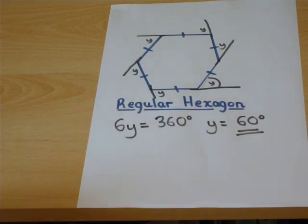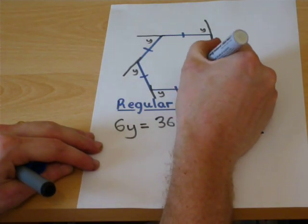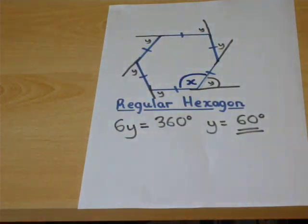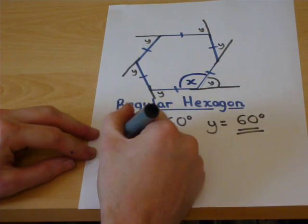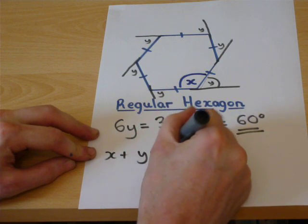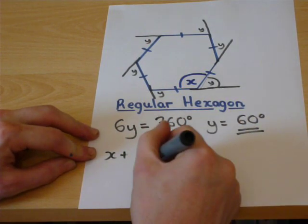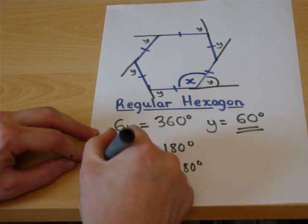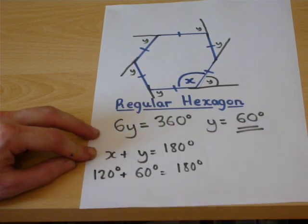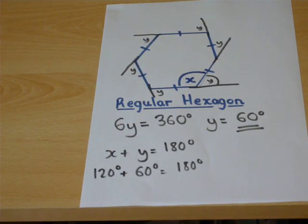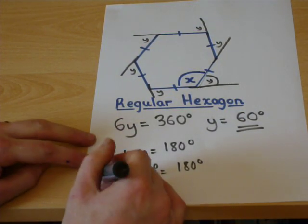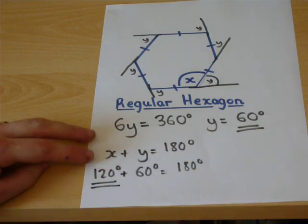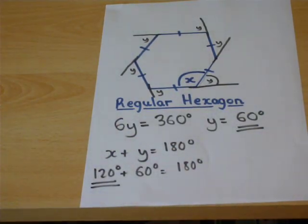But therefore, that gives us another way of finding the interior angle, because, as we noted before, that would be X, and X plus Y is 180 degrees. Y is 60 degrees. So X must be 120 degrees in a hexagon. So the interior angle of the hexagon is 120 degrees.